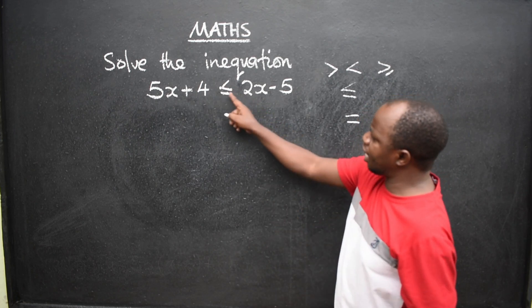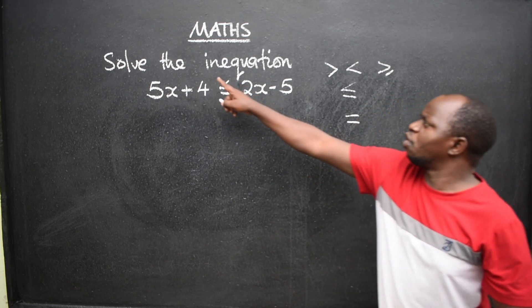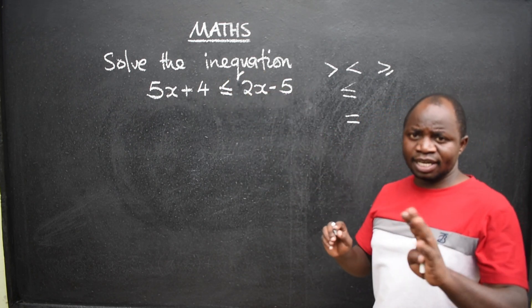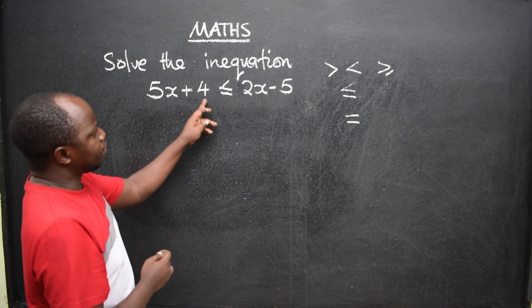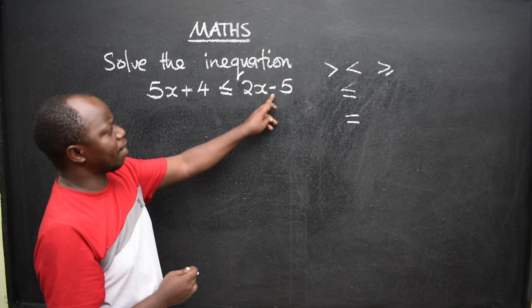Okay, so if there was an equal sign here, we could have said solve the equation. Is that clear? Now, how do we solve such kind of questions? 5x plus 4 less or equal to 2x minus 5.